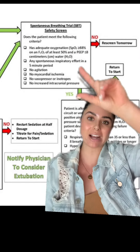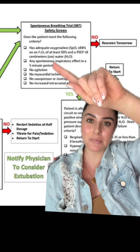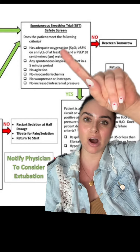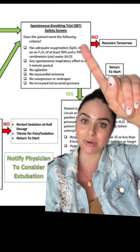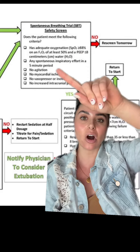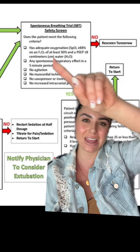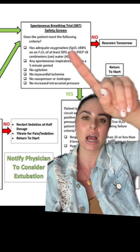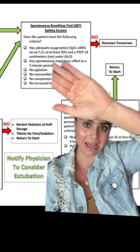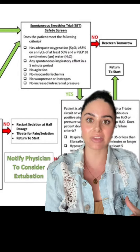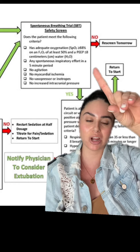For this portion we're actually going to want to check yes in these boxes. Does your patient have adequate oxygenation, meaning their stats are greater than or equal to 88 percent? They are on an FiO2 of 50 percent or less — I think they have a typo here — and a PEEP of eight or less.